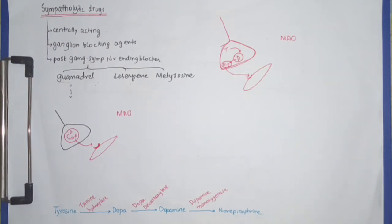The next group is postganglionic sympathetic nerve ending blockers. This group of agents includes guanethidine, reserpine, and metyrosine. I'll let you know the mechanism of action of each of them individually.